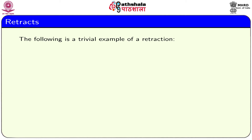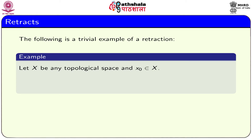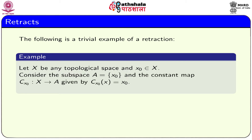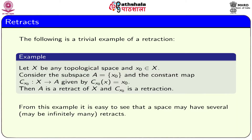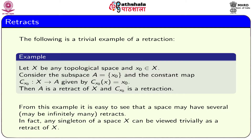A trivial example of a retraction: if we take a topological space X, pick a point x₀ from X, consider the subspace A as the one-point set {x₀}, and consider the constant map c_{x₀} which maps X to A, then c_{x₀} is a retraction and A becomes a retract of X. From this example, it is easy to see that any singleton set of a given space X can be viewed trivially as a retract of X.